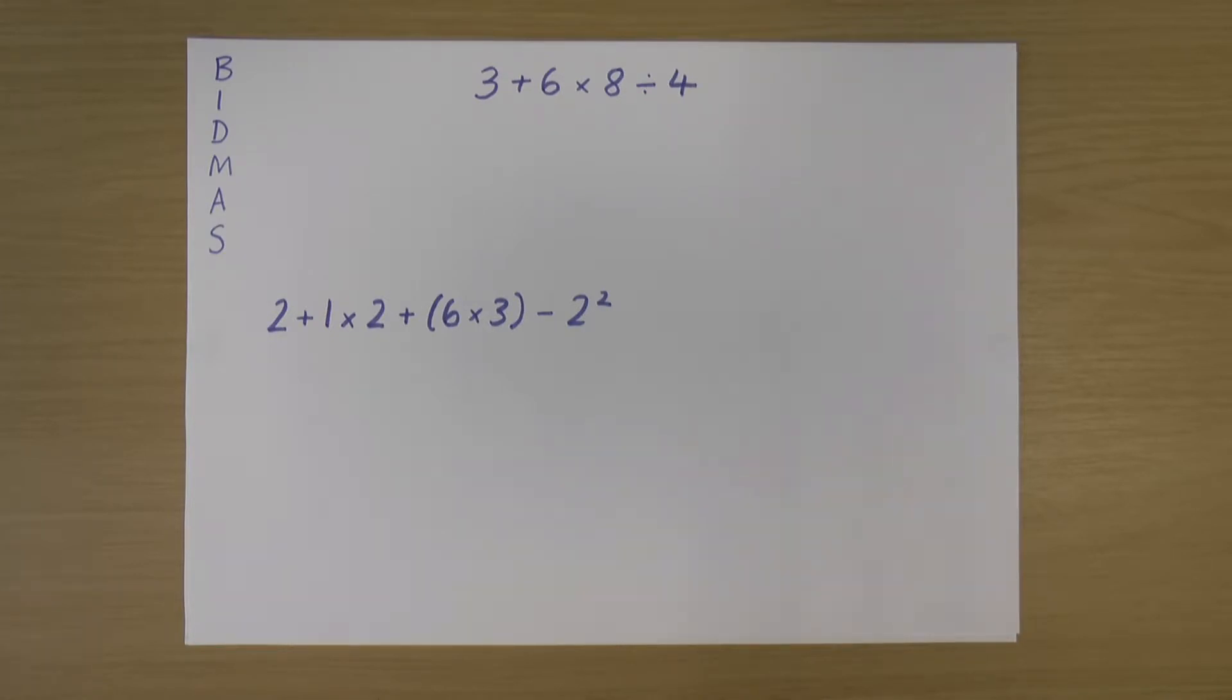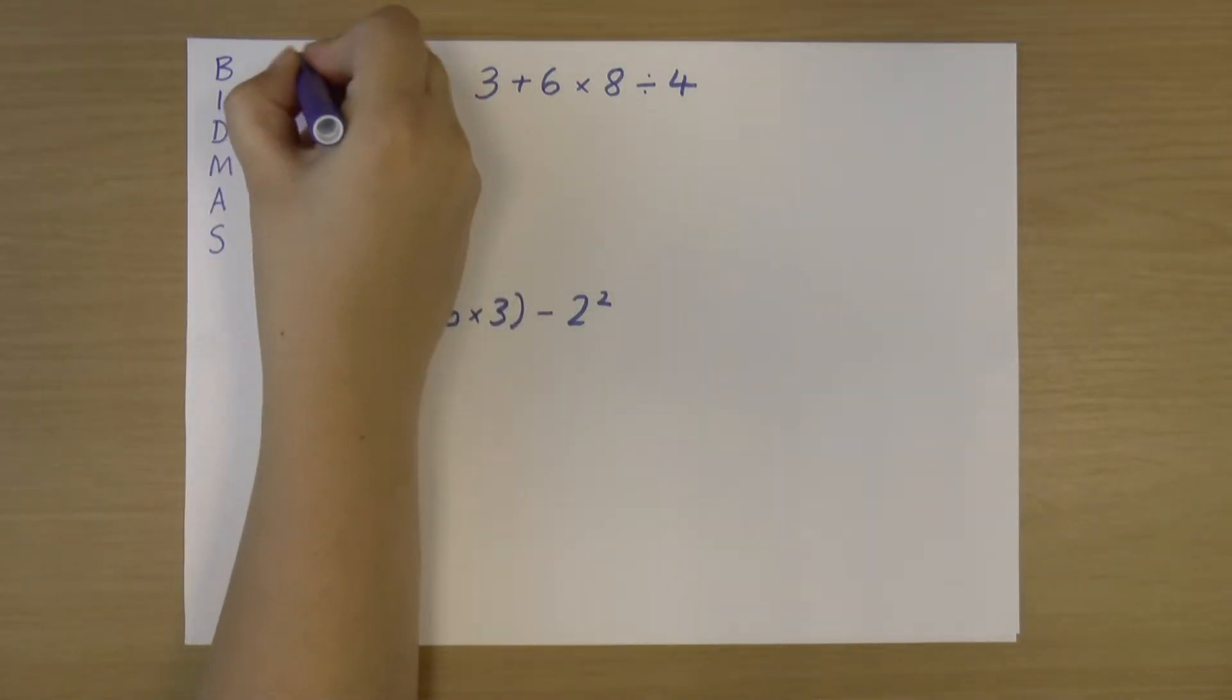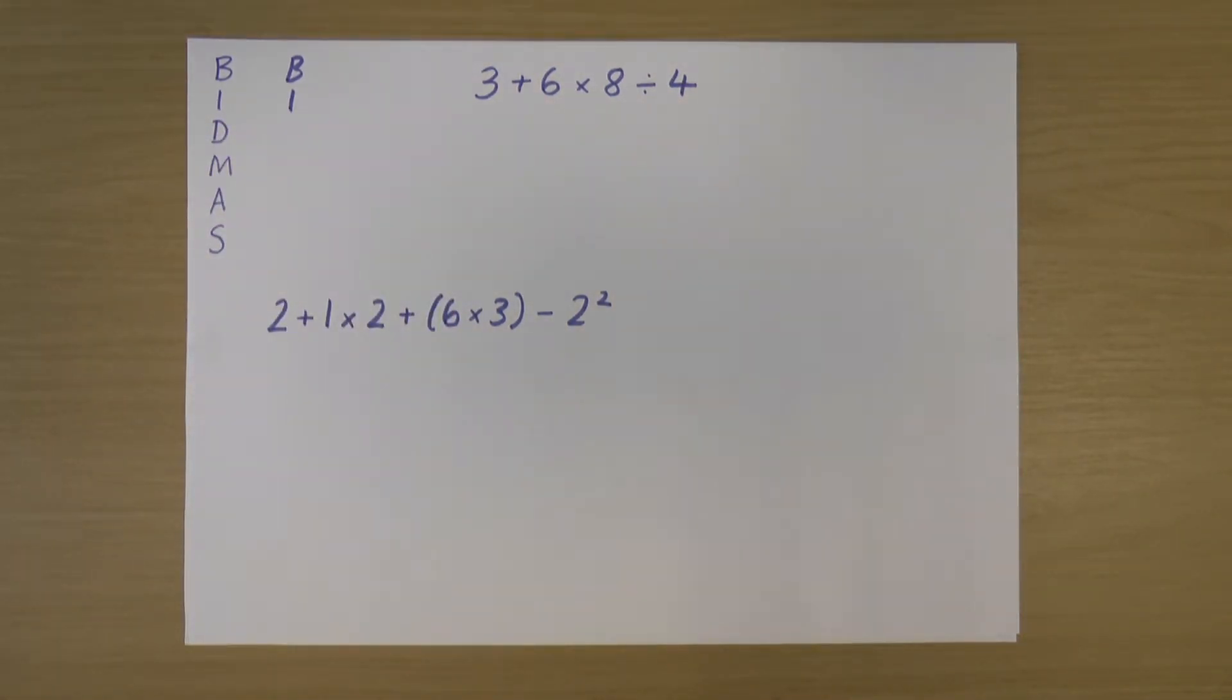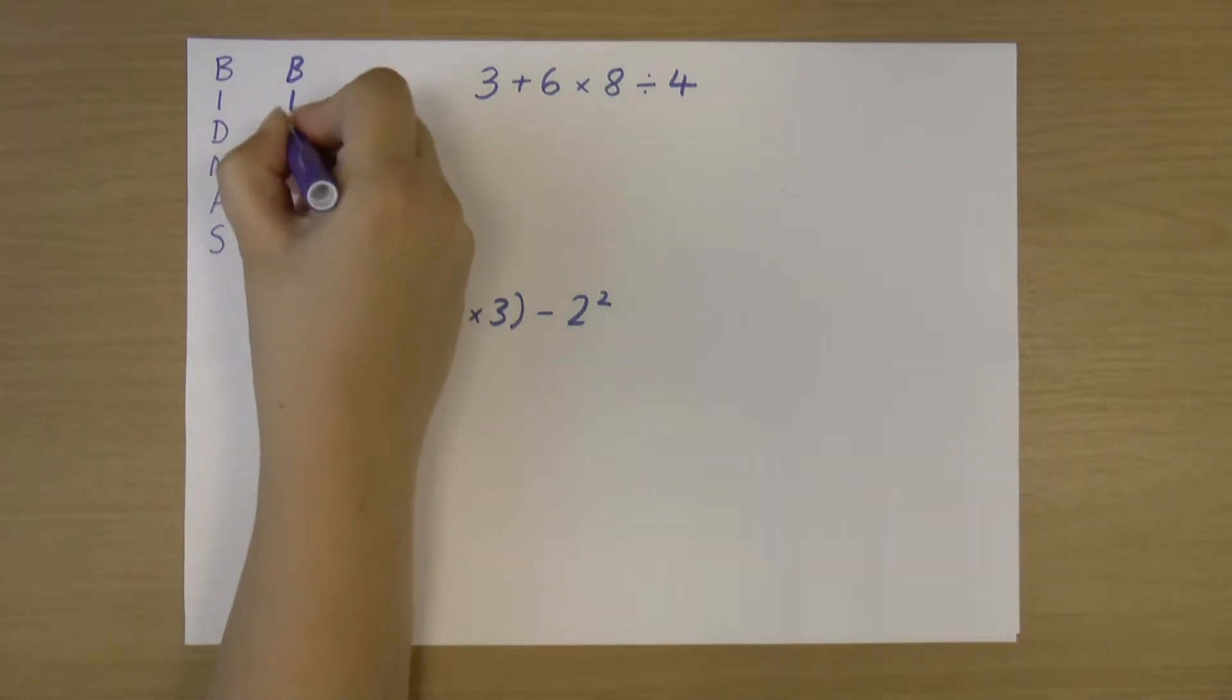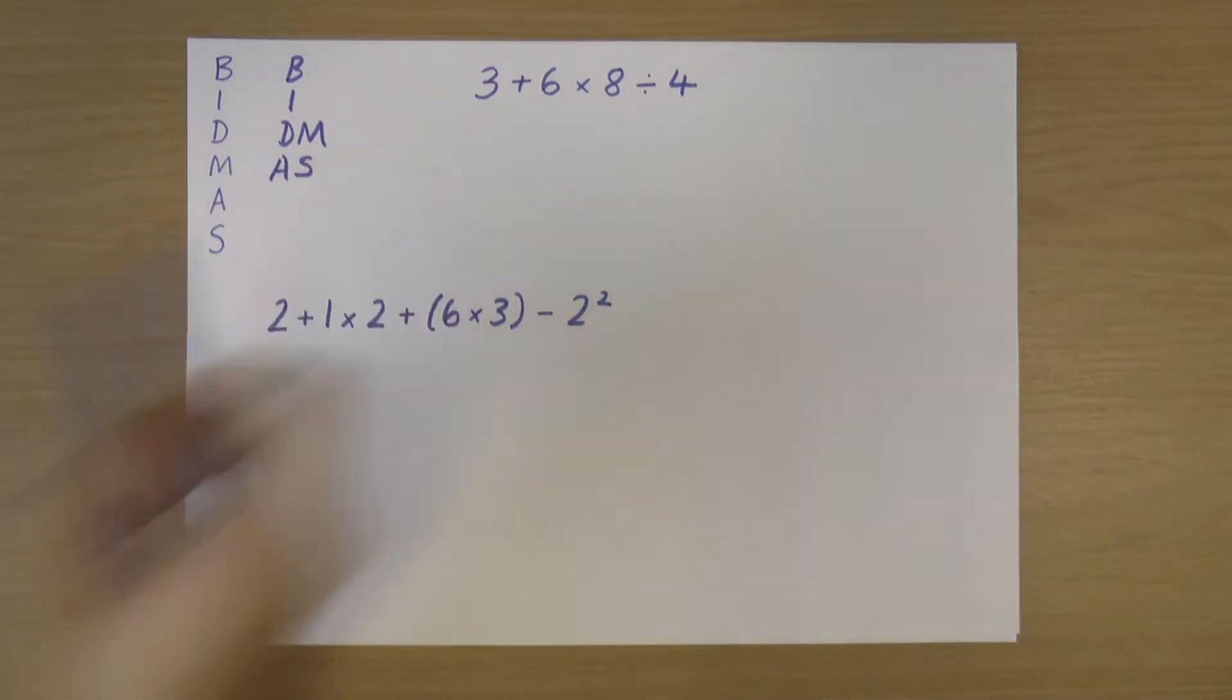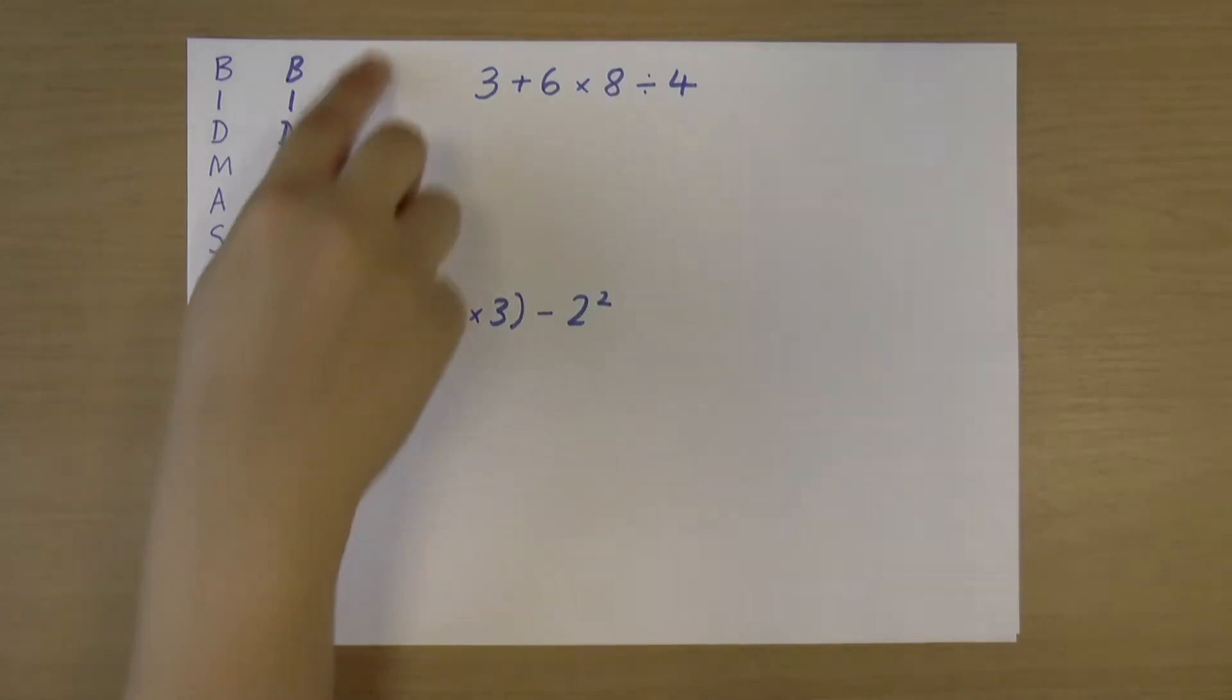So what I actually usually do is I write out BIDMAS in a slightly different way. We've still got brackets, still got indices—those always happen in that order. But then division and multiplication happen equal priority, so I wrote those next to each other. And then addition and subtraction also equal priority, so I wrote those next to each other as well. That's how I usually write out BIDMAS.